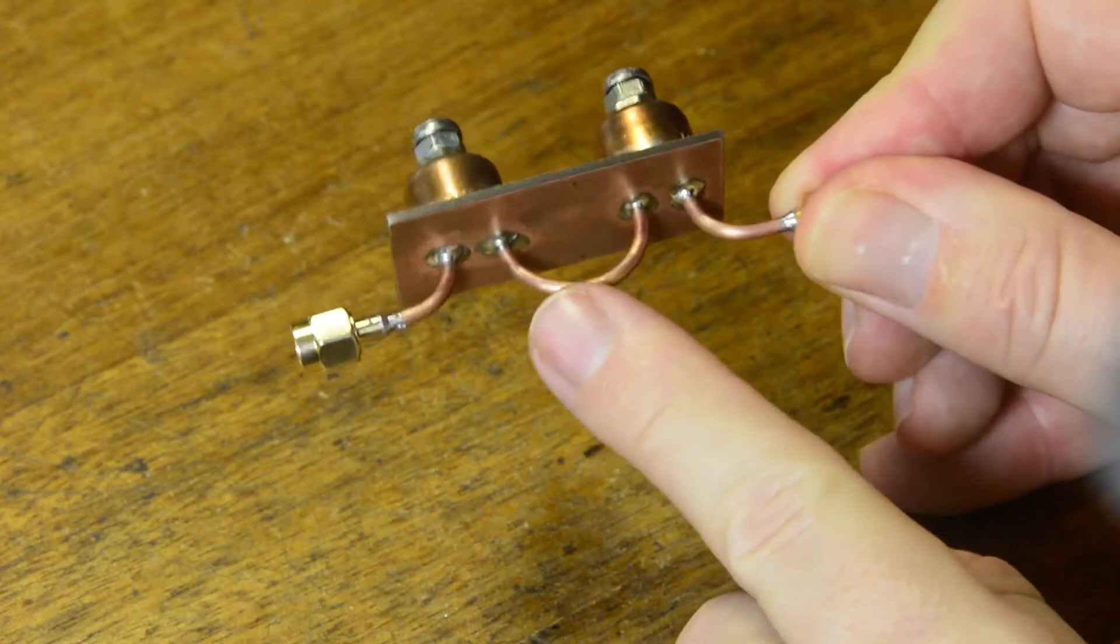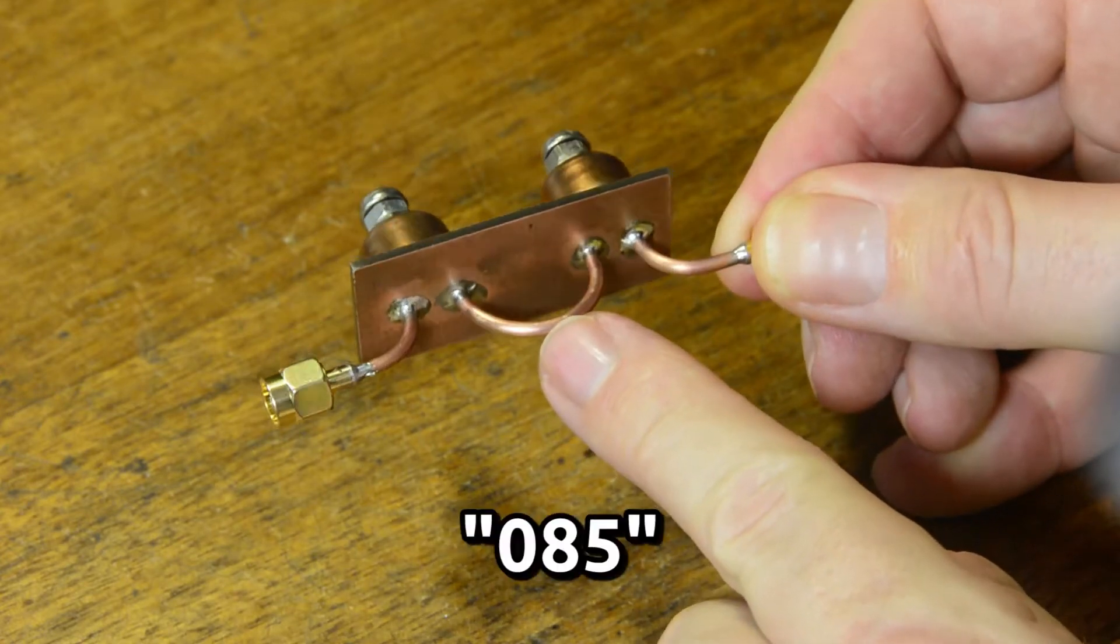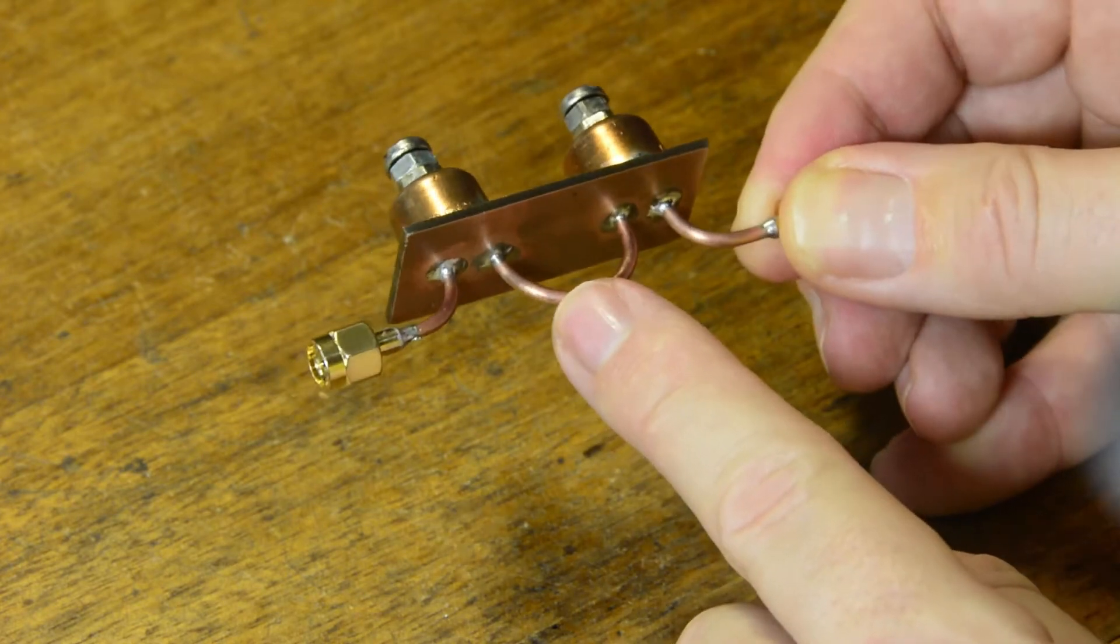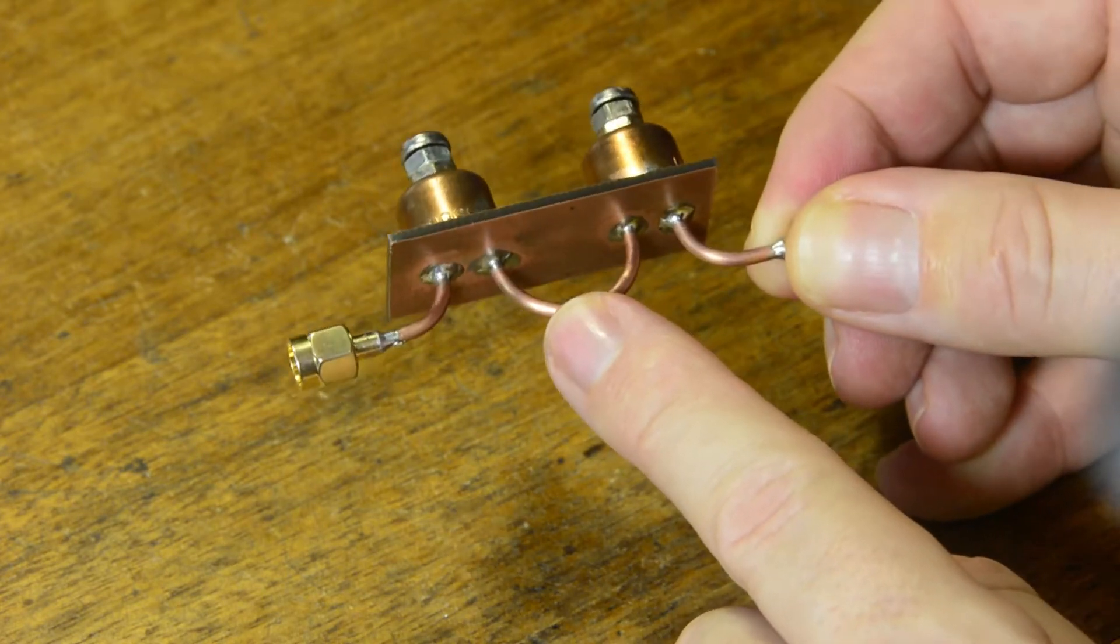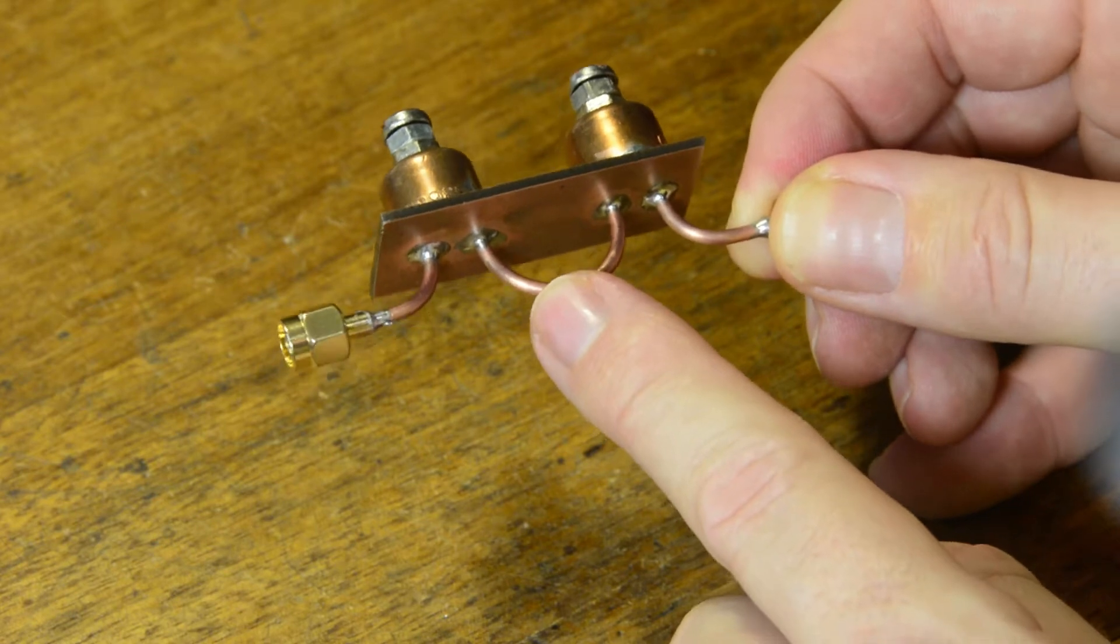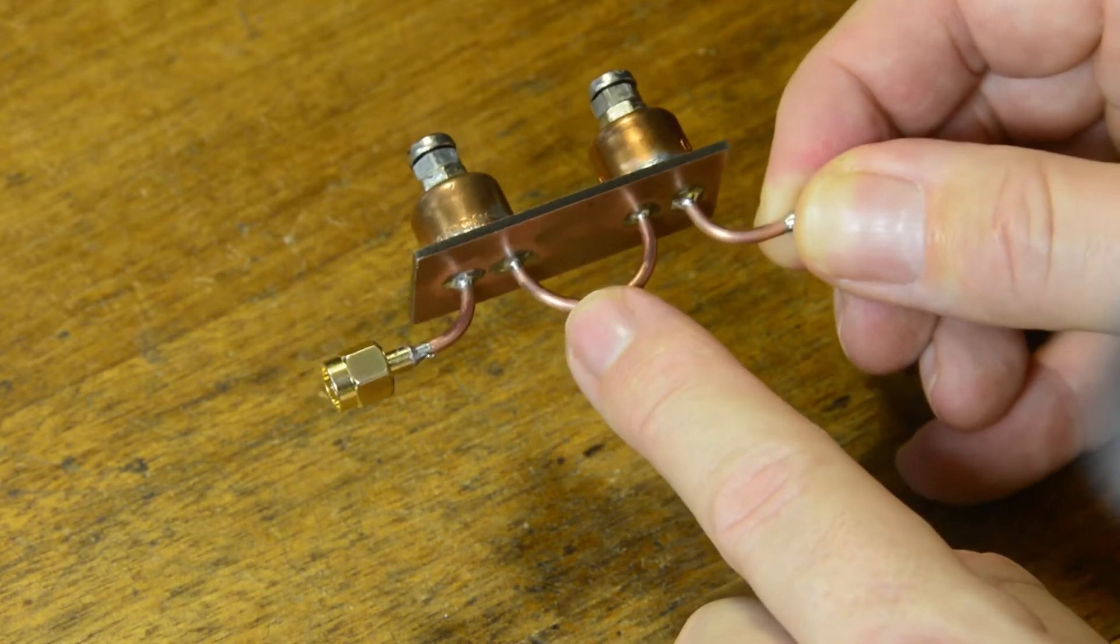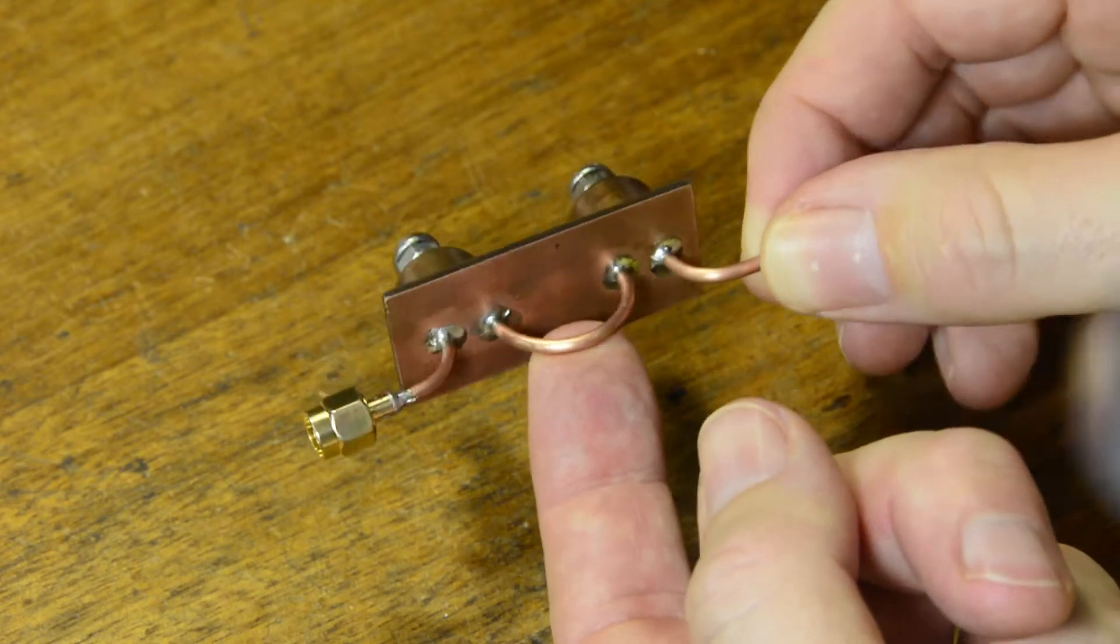Under here we have some 085 rigid hardline. It's a rigid type coaxial cable. It's very easy to work with. The inner dielectric is Teflon so it's virtually impossible to melt it. Unlike your common RG58 type cables you'd use at HF. This stuff's almost idiot proof to work with.